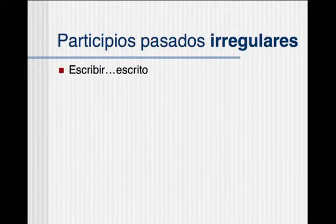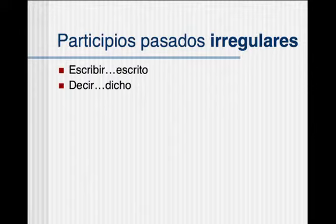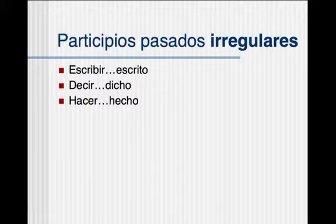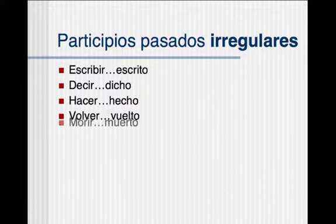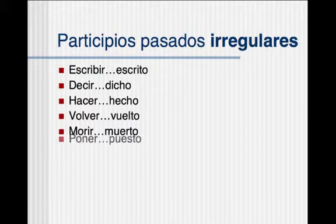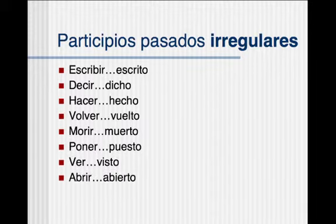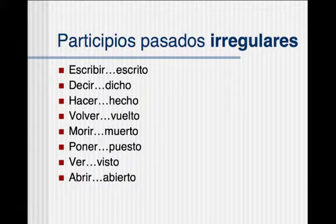There are some irregulars. Escribir becomes escrito — like 'written'; I have written many letters, and it's irregular in English too. Decir (to say) becomes dicho — said. Hacer becomes hecho — made; you might have seen 'Hecho en México,' which means 'made in Mexico.' Volver becomes vuelto. Morir becomes muerto — that might make a good connection for you; it's just an irregular past participle meaning 'dead.' Poner becomes puesto. Ver becomes visto. Abrir becomes abierto. There are a few more that we'll get into later — you kind of have to memorize these, but you'll start seeing them a lot more often.